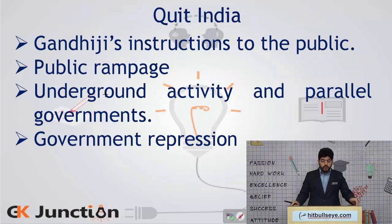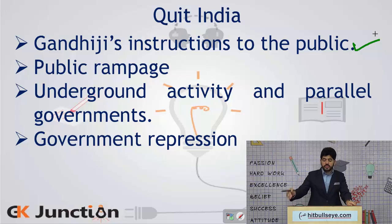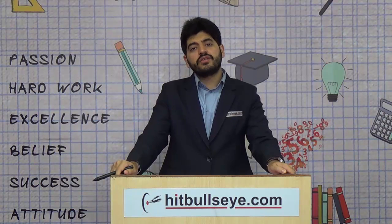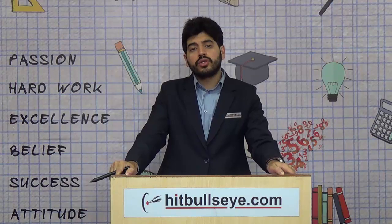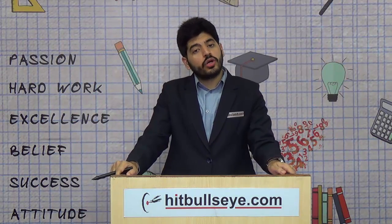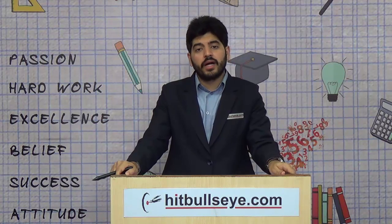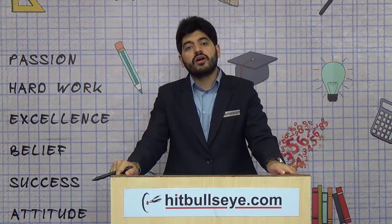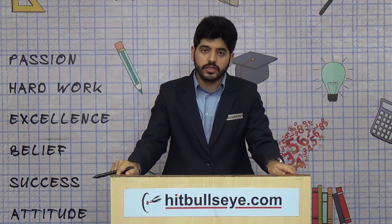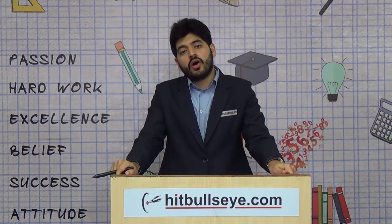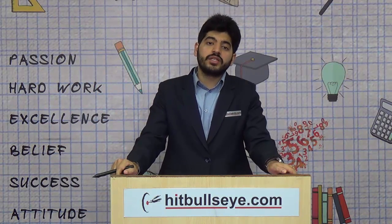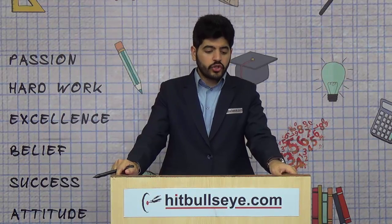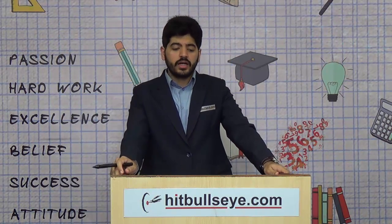Talking about the events of the Quit India Movement: Gandhiji had given instructions to various sections of the public. He instructed army people or sepoys not to leave the army but not to fire on their compatriots. He instructed students to leave governmental schools if they were confident in their studies. He instructed peasants or people of princely states not to cooperate with a prince if that prince was cooperating or was hand in glove with the British.